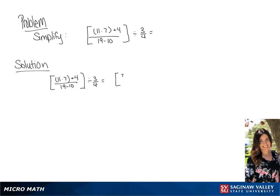So we have 77 plus 4 all over 19 minus 10, which is 9, divided by 3 over 4.